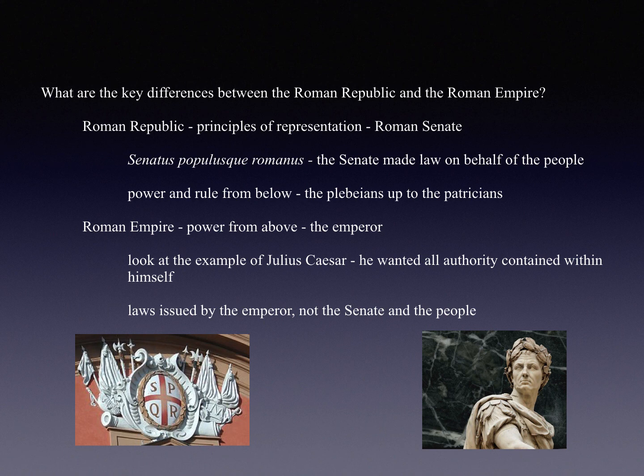But all of this ended with the advent of the Roman Empire under Octavian Augustus. Essentially, power now came from above, namely in the person of the emperor. Look at the example of Julius Caesar — Julius wanted all authority contained within himself, and he was assassinated for it. But eventually the Roman Empire developed with the first emperor, Octavian Augustus, and laws were essentially issued by the emperor, not the Senate and not the people.